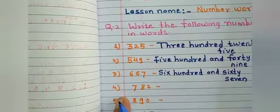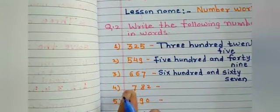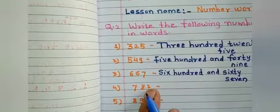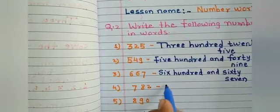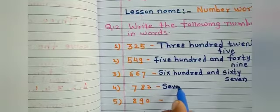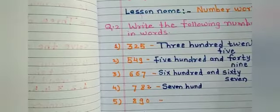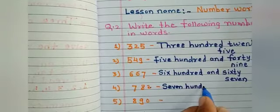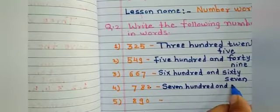Next number: seven, eight, two. You need to identify hundreds and tens. Seven hundred and eighty-two.